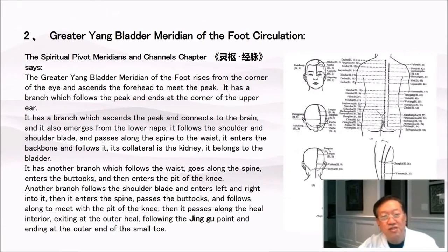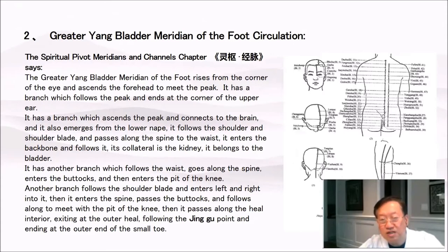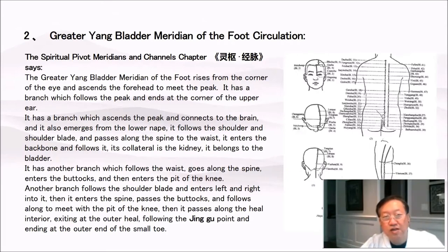Greater yang bladder meridian of the foot, circulation. The Spiritual Pivot Meridians and Channels chapter says: the meridian rises from the corner of the eye and ascends to the forehead to meet the peak. A branch follows the peak and ends at the upper ear. Another branch ascends the peak, connects to the brain, and emerges from the lower nape. It follows the shoulder and shoulder blade, passes along the spine to the waist, enters the backbone, and its collateral is the kidney, belonging to the bladder. Another branch follows the waist, goes along the spine, enters the buttocks, and then enters the pit of the knee. Another branch follows the shoulder blade, enters left and right, then passes the buttocks, meets the pit of the knee, passes along the heel interior, exits at the outer heel, following the jingu point and ending at the outer end of the small toe.